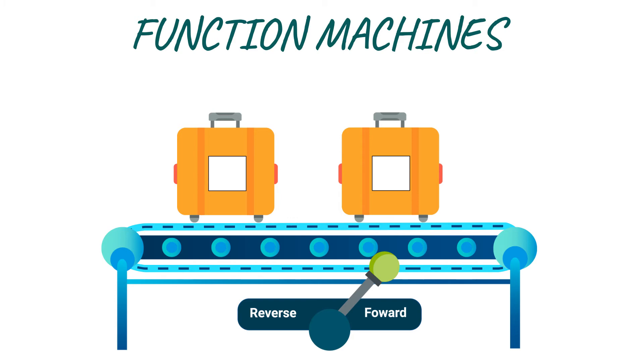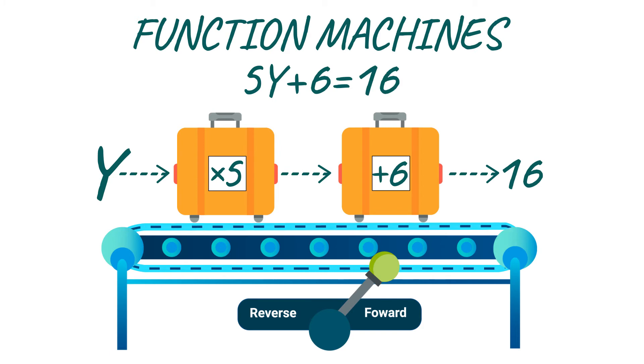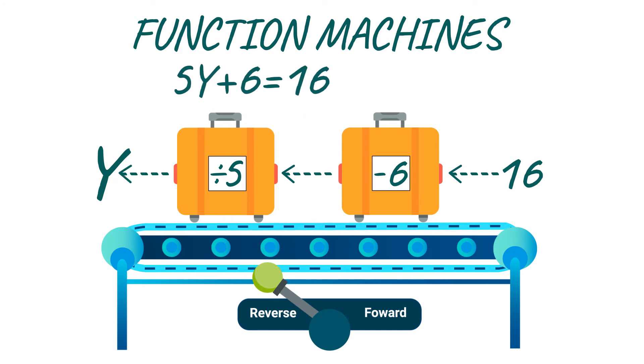Let's say we have to solve the equation 5Y plus 6 equals 16. So if we put our machine on reverse, we'll do opposite math operations. The opposite of adding 6 is taking away 6 and the opposite of multiplying by 5 is dividing by 5. Are you following so far? Good.